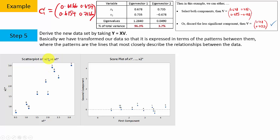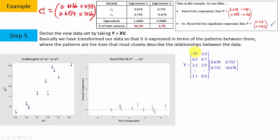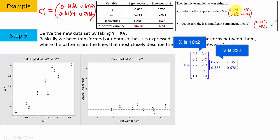This is the original dataset — the star indicates that. After transformation, this is the new dataset. The scatter plot of the new dataset is called a score plot, and each of the values of the new dataset is called scores. To get the scores, we take the matrix of the original data — 10 rows for 10 samples and 2 columns for 2 variables — and multiply by the transformation matrix V. In this case, when retaining both PCs, V is 2-by-2, so a 10-by-2 times 2-by-2 gives a 10-by-2 result.